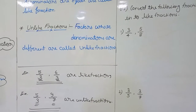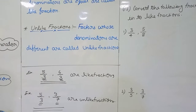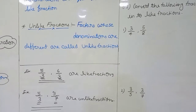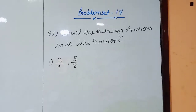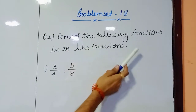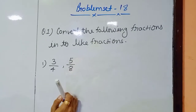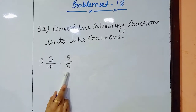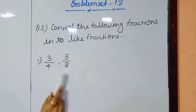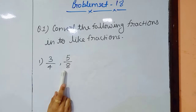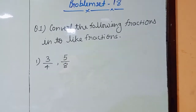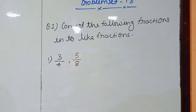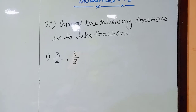The second type of question is: we have to convert the unlike fraction into a like fraction. So how are we going to convert it? Let's see. In these fractions we have different denominators — as we learned, if we have different denominators these fractions are unlike fractions — and we have to convert them into like fractions, meaning we have to make the denominators the same.